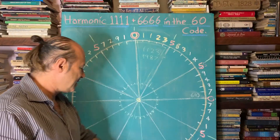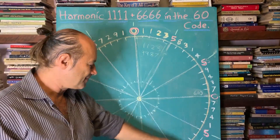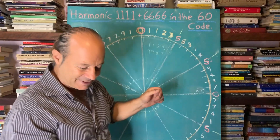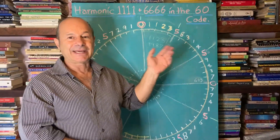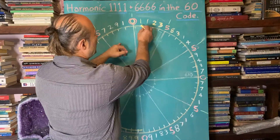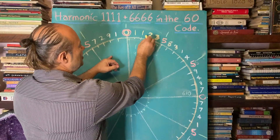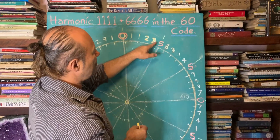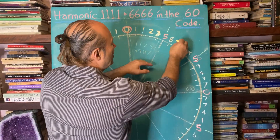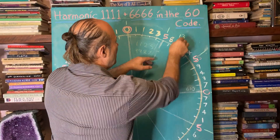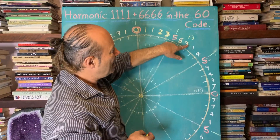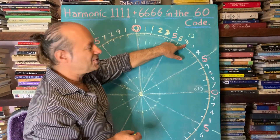The way we got the 60 code from the Fibonacci numbers was by looking at the final digits — taking away 10. So if we start off with Fibonacci numbers: 1 and 1 is 2, 1 and 2 is 3, 3 and 5 is 8, 5 and 8 is 13. When I get to 13, if I took away 10 from that, the final digit is 3.